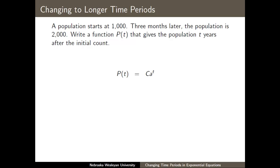If we return now to the generic equation, we can proceed just like we did before. I know that the initial value is 1,000, and the point of data that I have is that if the time is one-fourth of a year, that was the three months, that the population should be 2,000.